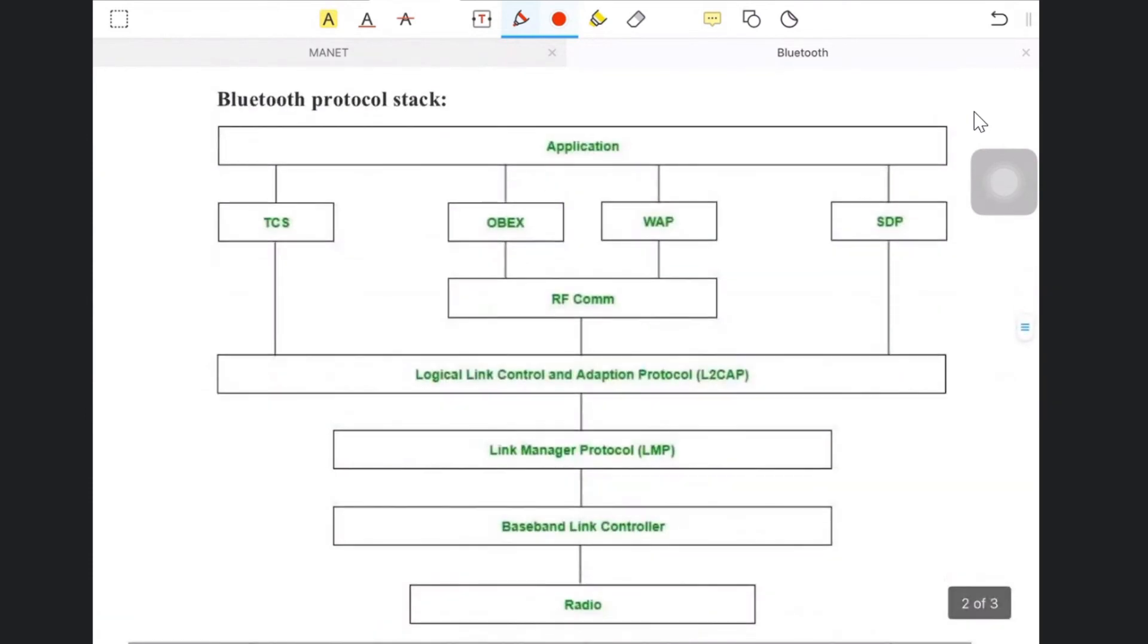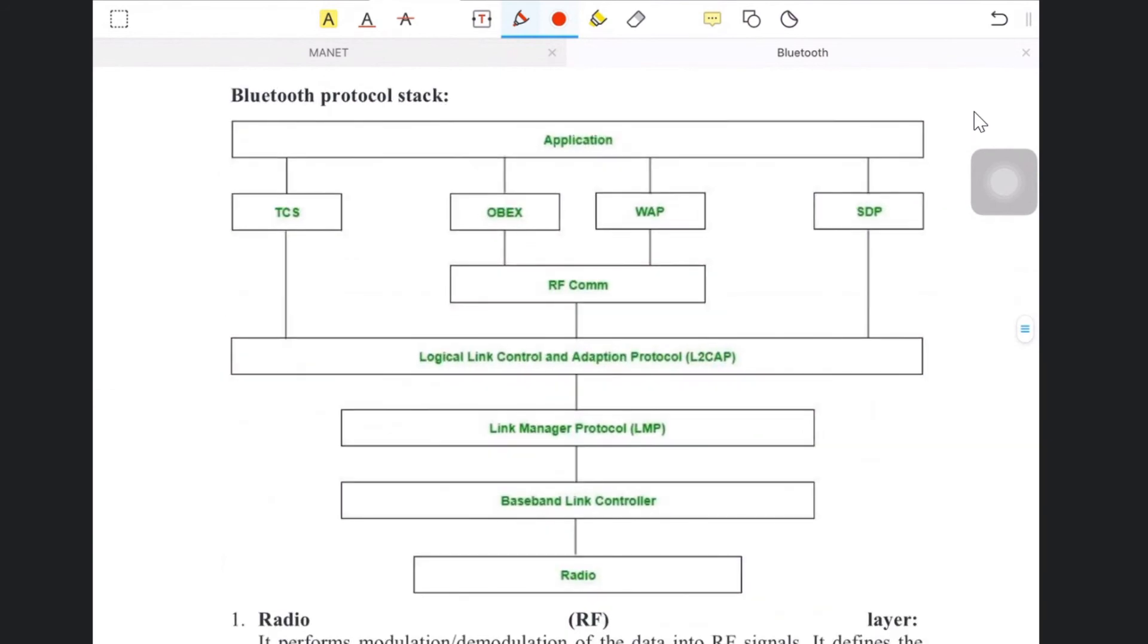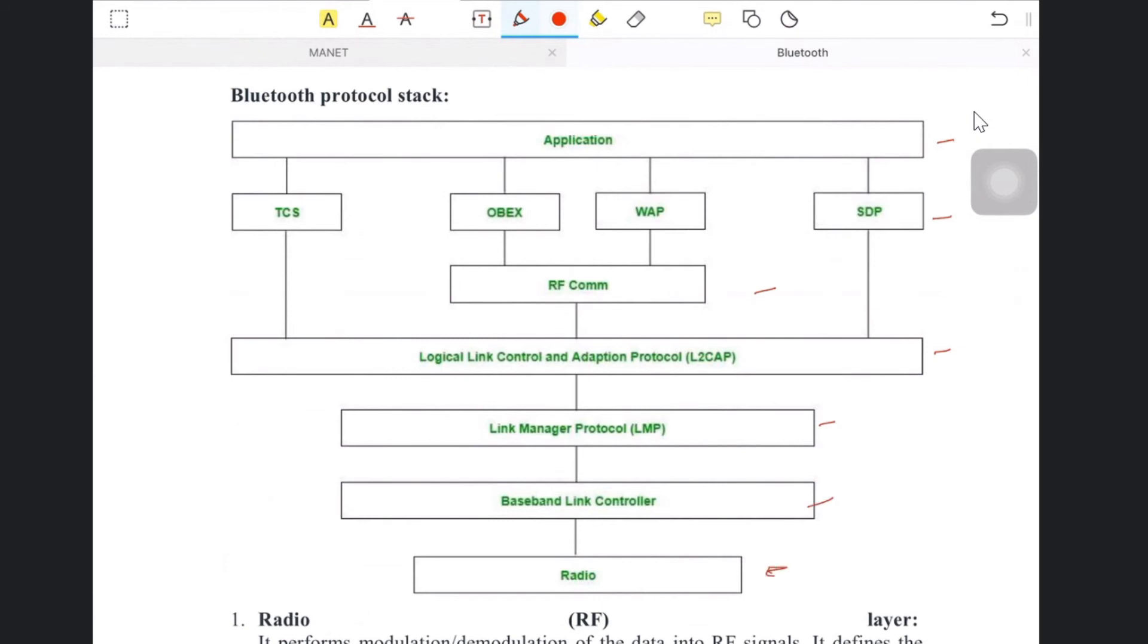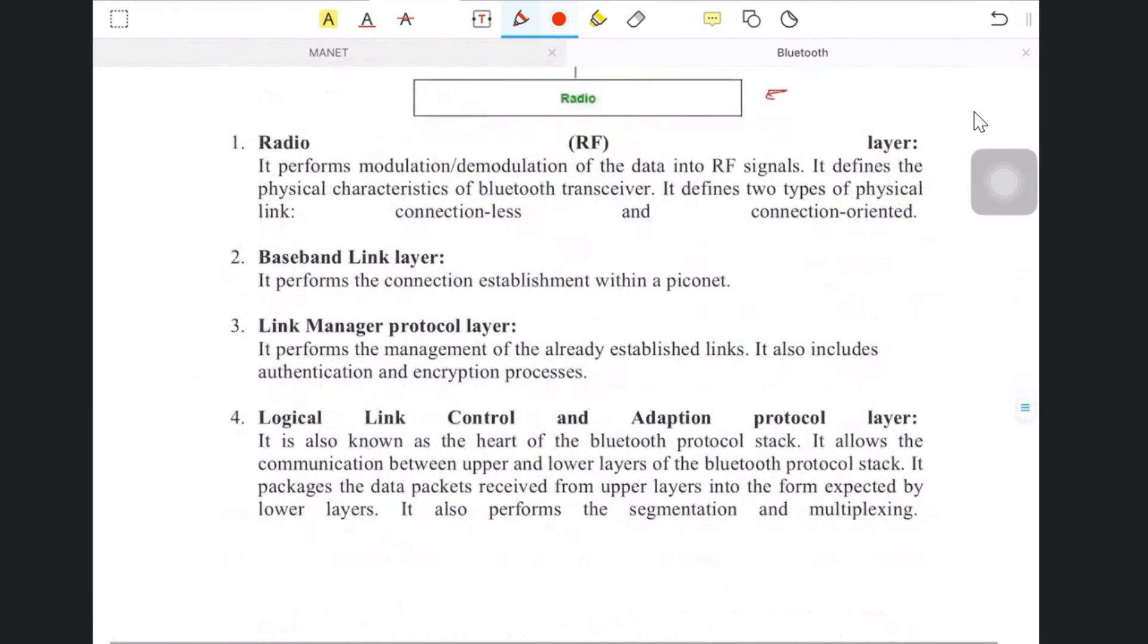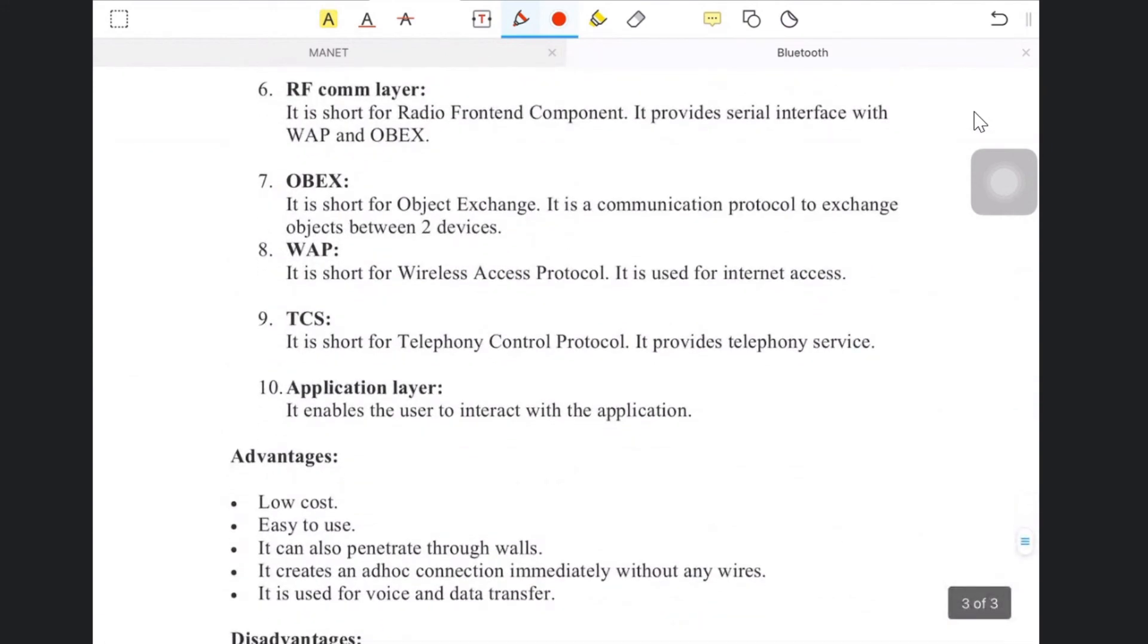This is the Bluetooth protocol stack. You can see the layers and how this layer pattern of this protocol works. The application, TCS, SDP, RFCOMM, logical link, link manager protocol, baseband, link control, and radio frequency—all these layers are defined here showing how these ten layers work, and which protocol is having which type of service.